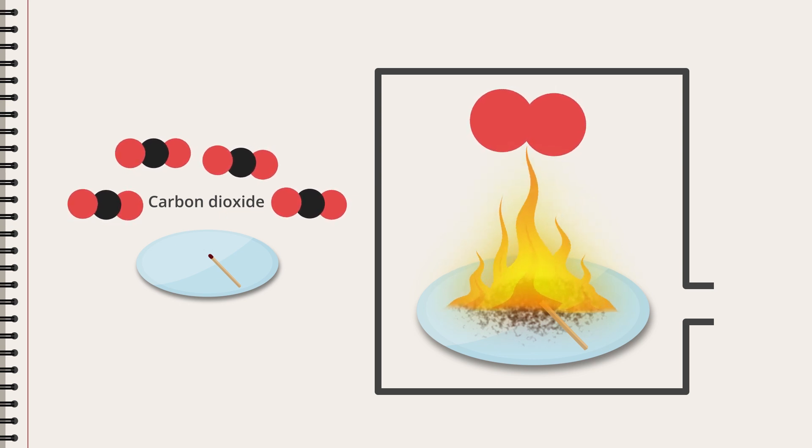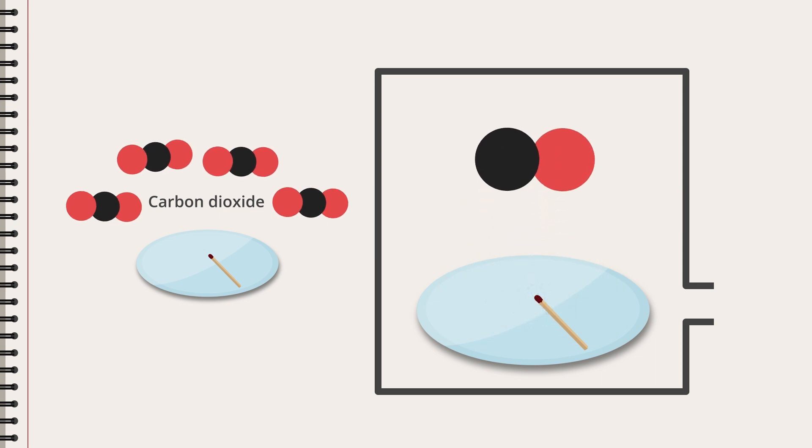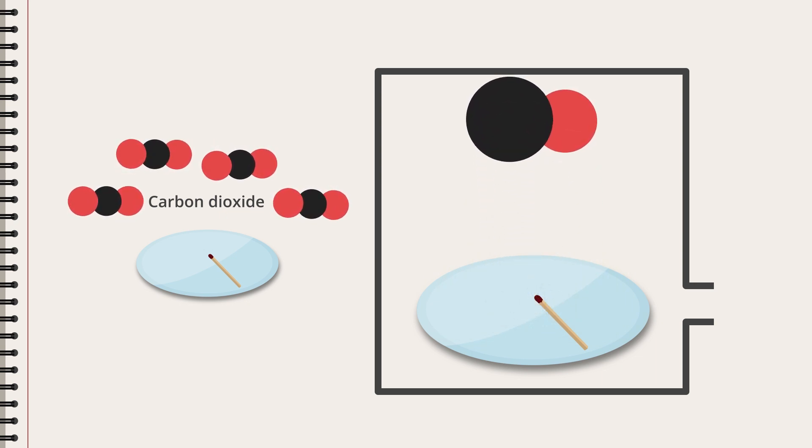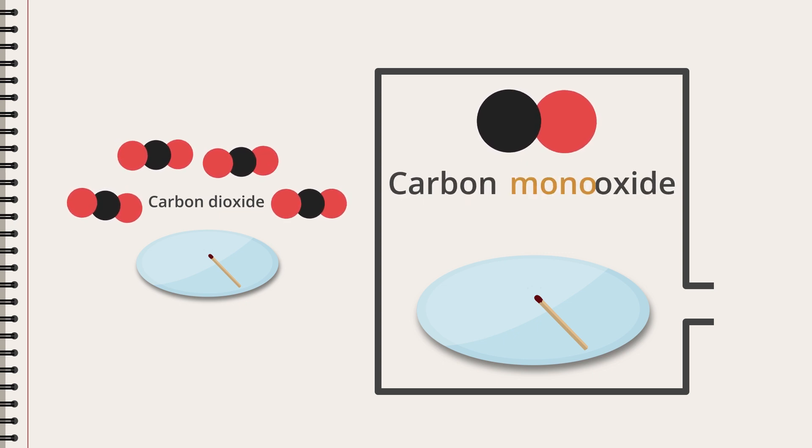When there is less available oxygen, like when the reaction takes place in an area with limited air supply, another reaction will occur as well where another product is formed. In this substance, each carbon atom is attached to one oxygen atom instead of two. Instead of carbon dioxide, carbon monoxide is formed, where mono means one.